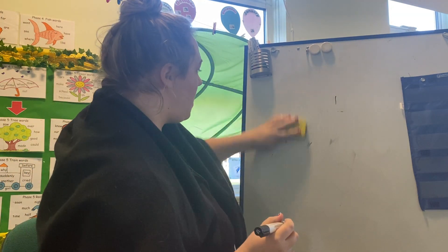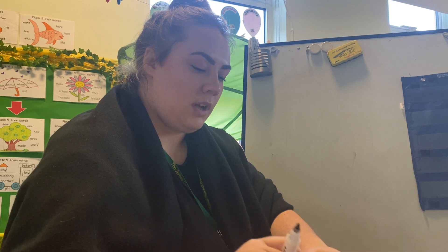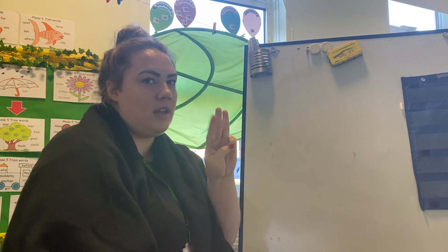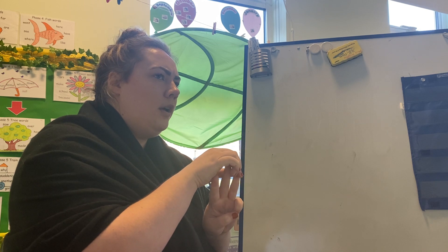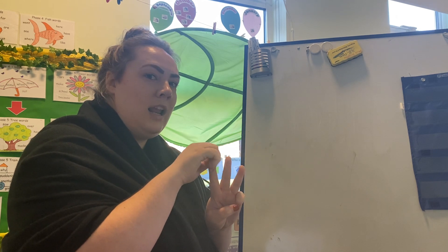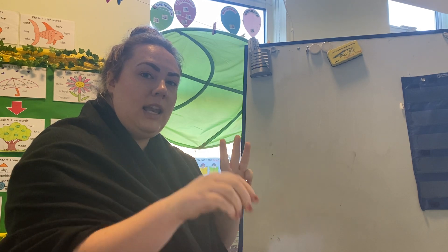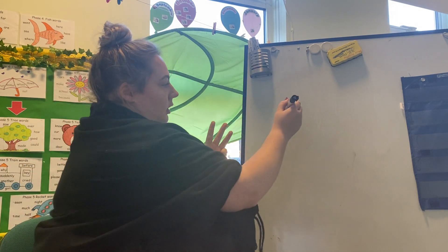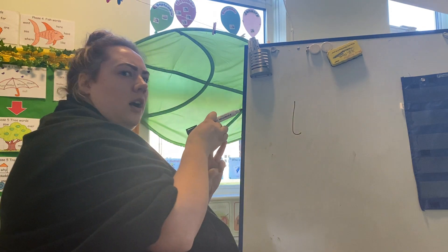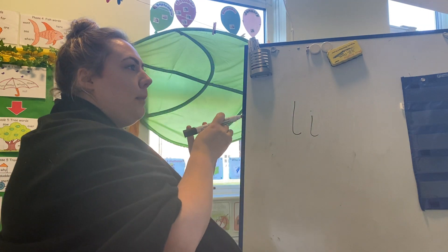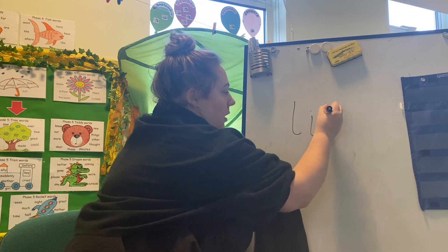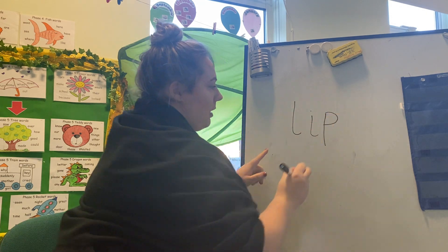Our next word is going to be 'lip'. I want you to get three fingers. We are going to spell the word lip — L-I-P. L-I-P. Lip. Then we need our L, then our I, then our P. Well done. And this spells lip.